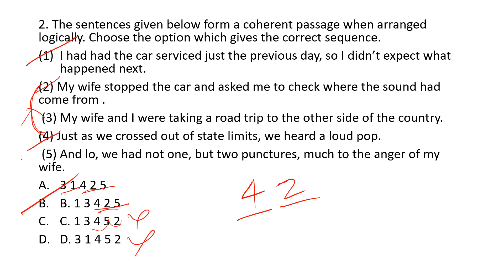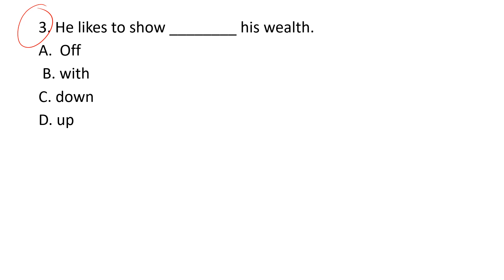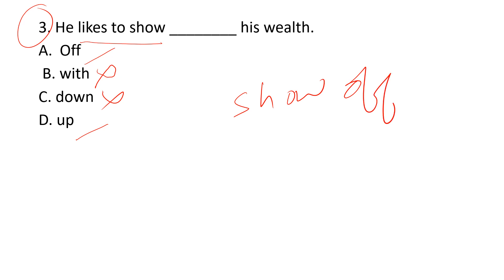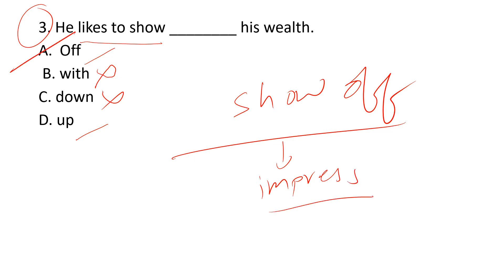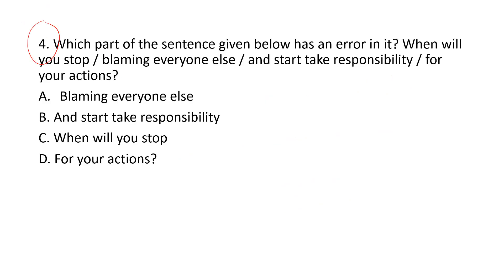The third question is a fill-in-the-blank: 'He likes to show blank his wealth.' Looking at the options: 'show with wealth' doesn't sound correct, 'show down wealth' doesn't make sense, so we are left with 'show off' and 'show up.' 'Show off' is a phrasal verb meaning to intentionally impress others. So option A is correct: 'He likes to show off his wealth' — he wants to impress others by displaying his wealth.